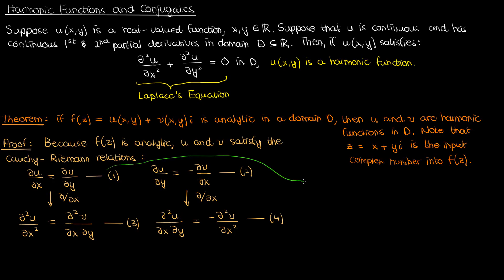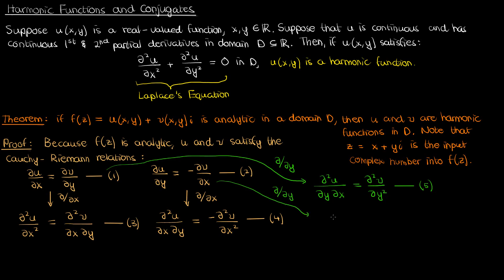If I then take equations 1 and 2 again and differentiate both sides with respect to y this time, I'll get the following. For the first equation I'll have the mixed partial on the left for u, and the second partial with respect to y on the right for v. For the second equation I'll have the second partial in y on the left for u, and the mixed partial on the right for v. I'm going to label these equations 5 and 6 respectively.